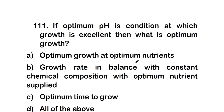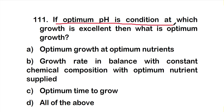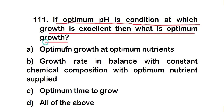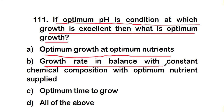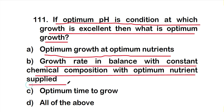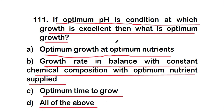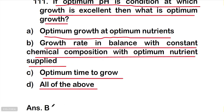Question 111: If optimum pH is the condition at which growth is excellent, then what is optimum growth? Option A, optimum growth at optimum nutrients; option B, growth rate in balance with constant chemical composition with optimum nutrient supply; option C, optimum time to grow; or option D, all of the above. The right answer is option B.